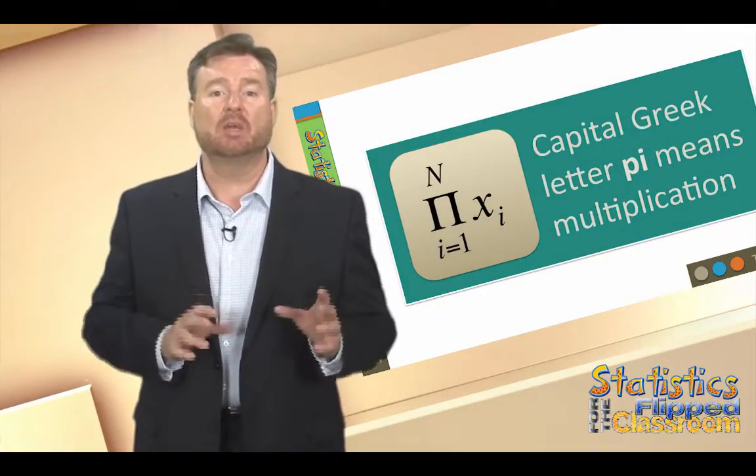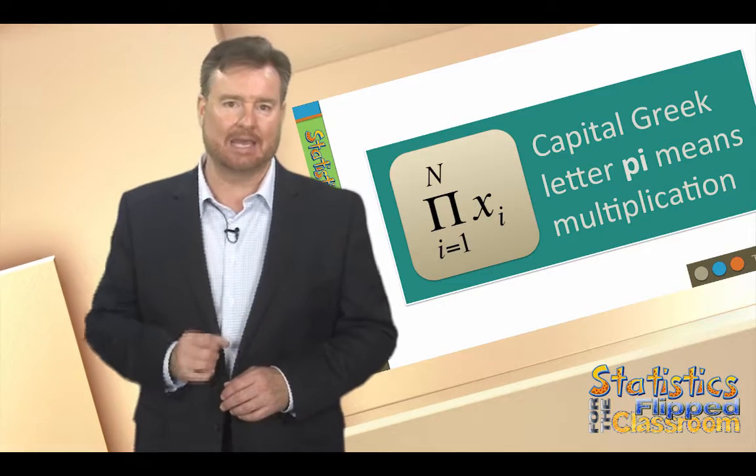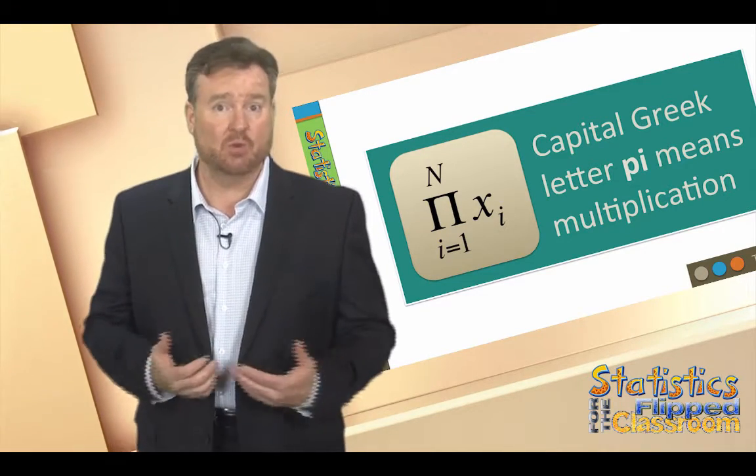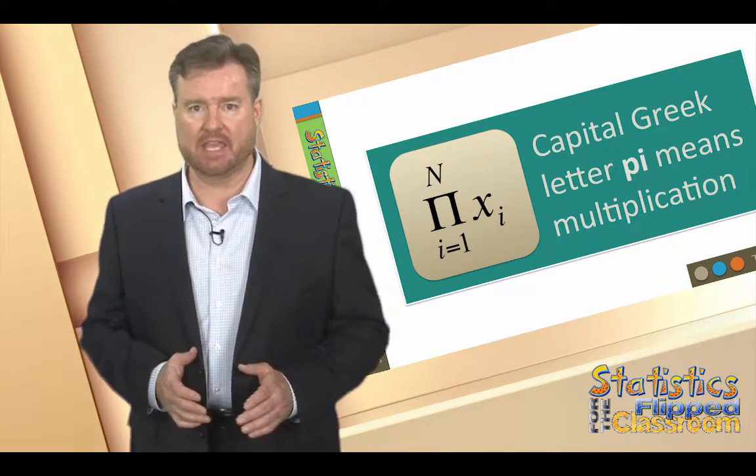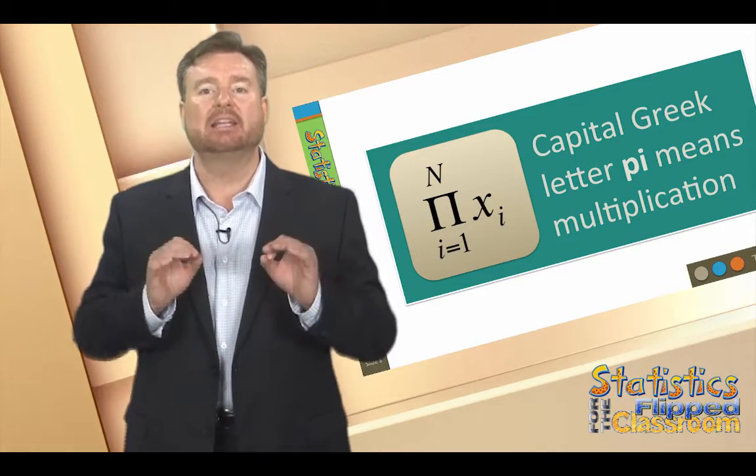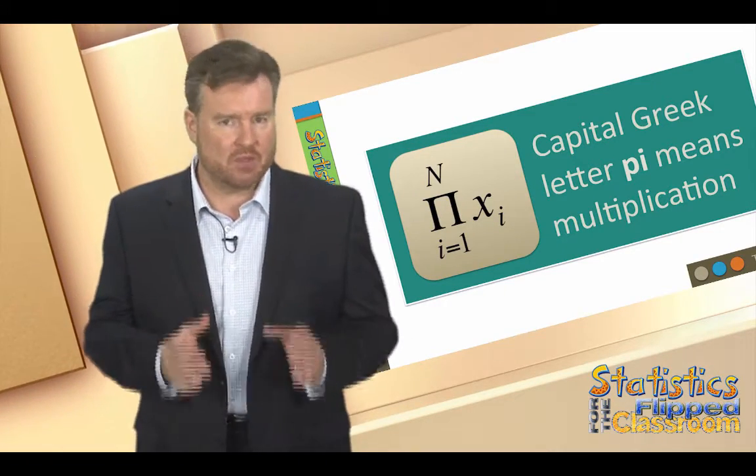Now just so you know, the symbol for multiplication is the Greek letter capital Pi. Pi x would mean to multiply each of the x values in the data set instead of adding them. We won't be using this notation, but it's still handy to know about.